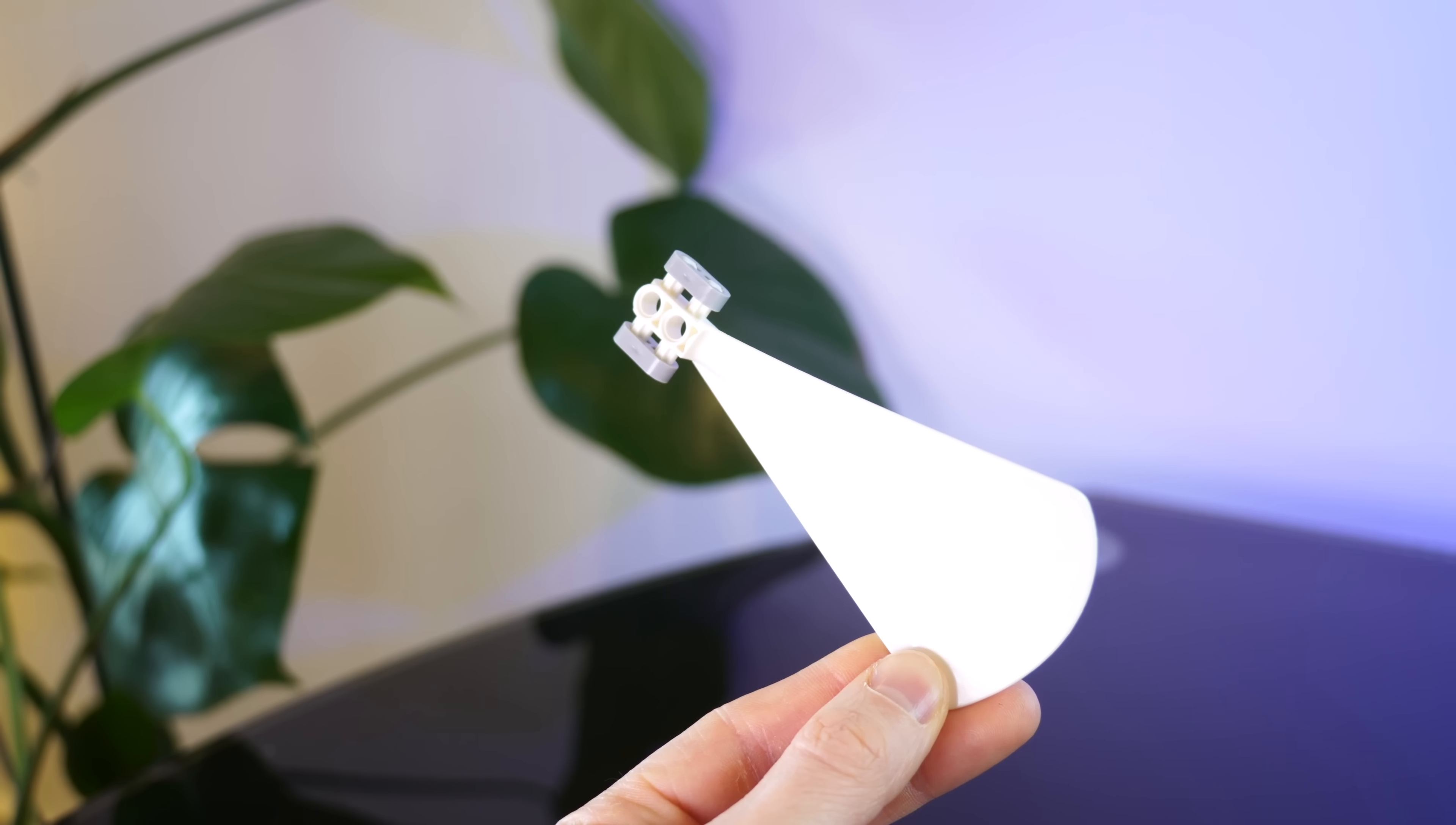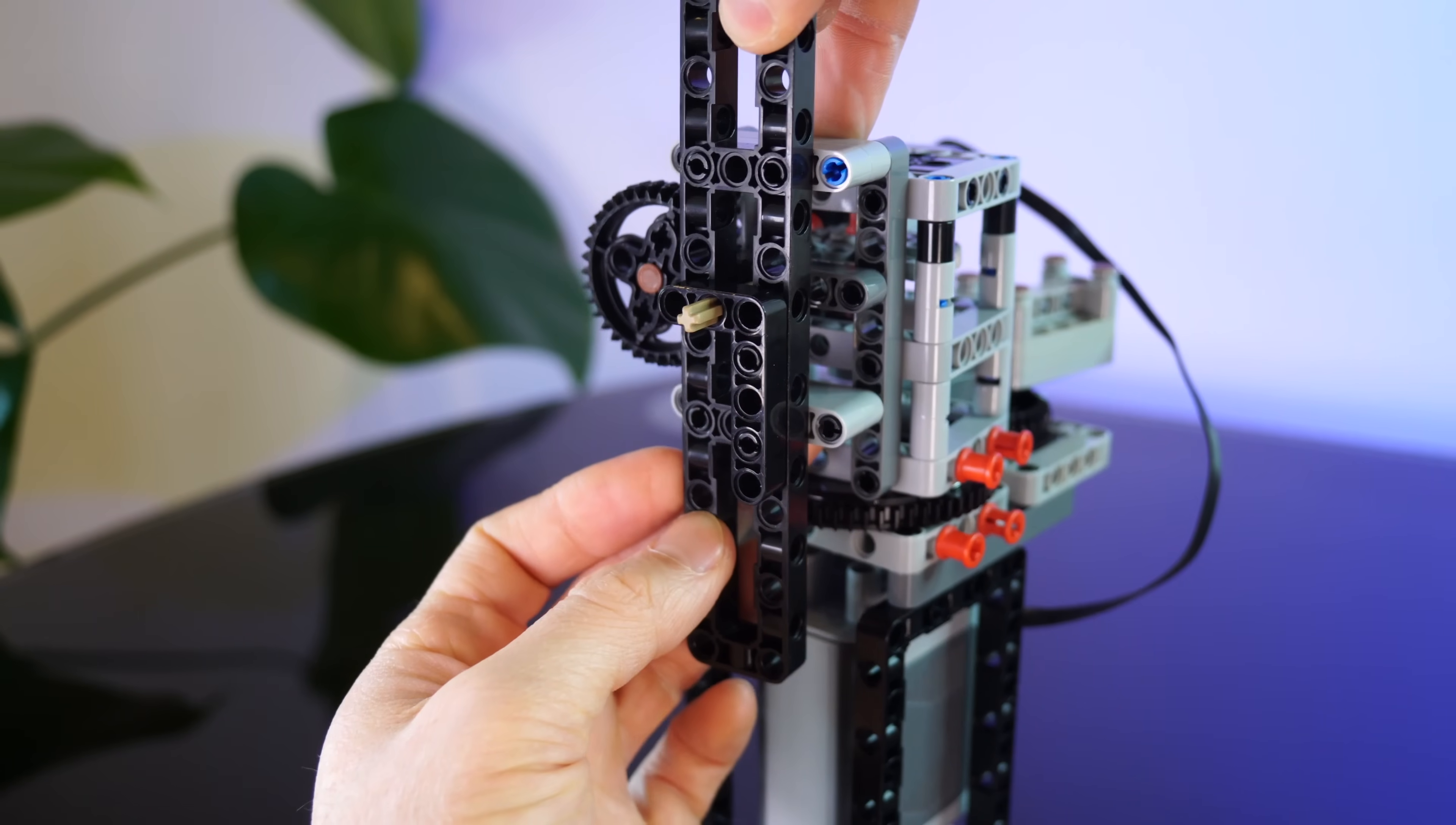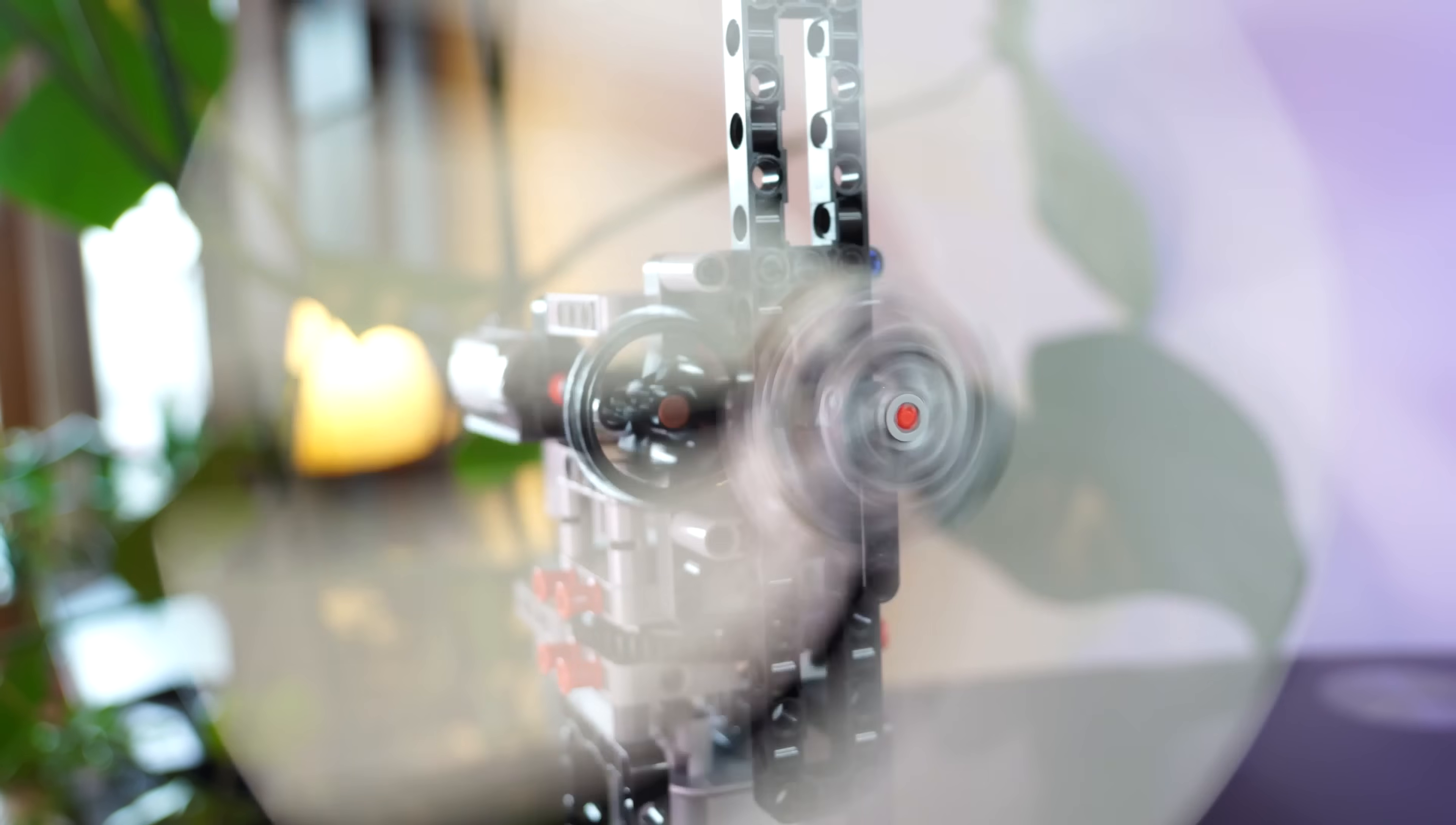Now we need some fan blades. These pieces push a surprising amount of air so they'll do nicely. This 3 to 1 gearing will speed up the blades just enough to push a reasonable current of air. I don't want it to blow too much or it might overpower the heat that I want to create. I want just enough breeze to direct the heat onto me while I work at my desk.